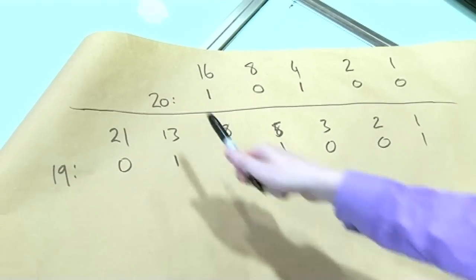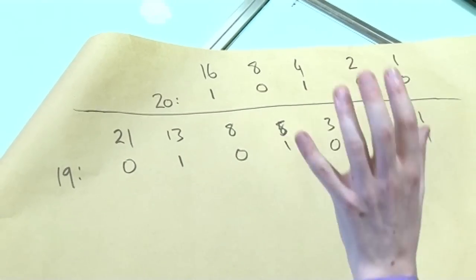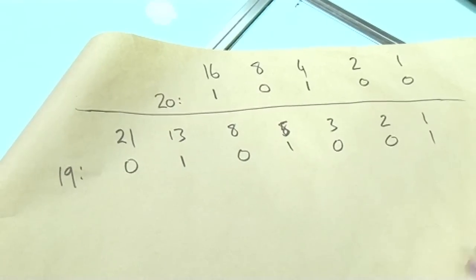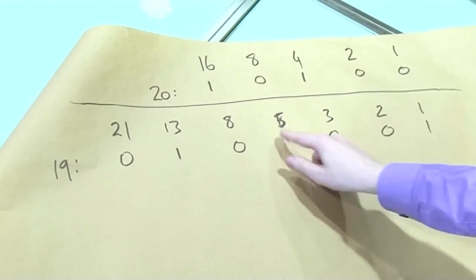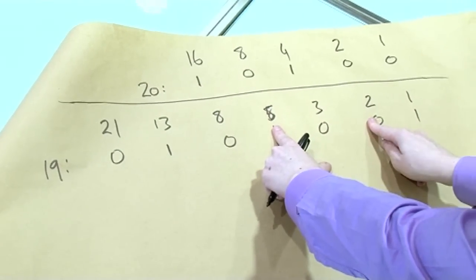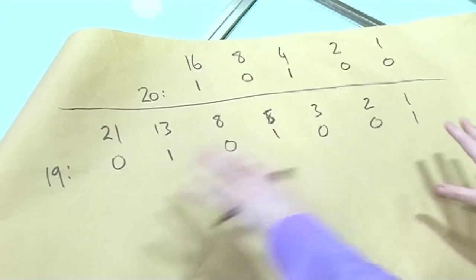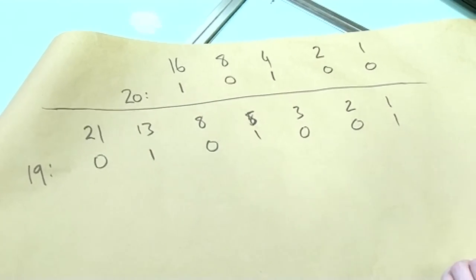Using this idea, you can make any number you want using Fibonacci numbers. And if you don't use consecutive Fibonacci numbers, so here I used a 5. Now, I could have used, instead of 5, I could have done 2 and 3. Well, if I don't use the consecutive ones, it's unique. So there's only one way to do this. So you can do this trick with Fibonacci, but now I'm going to add an extra twist to this.